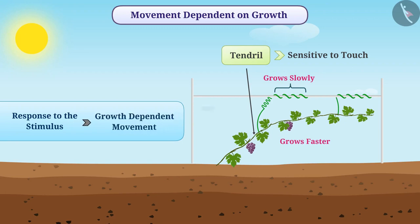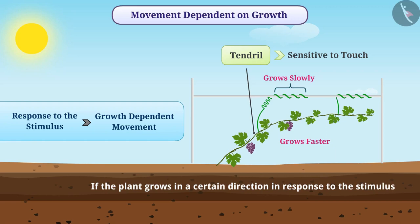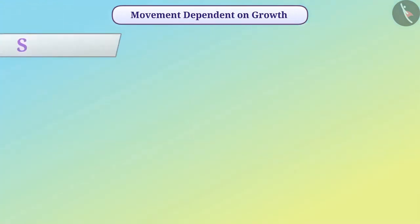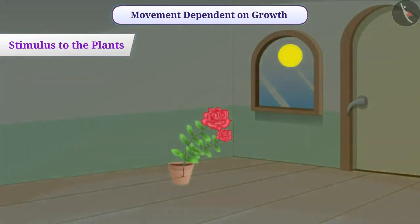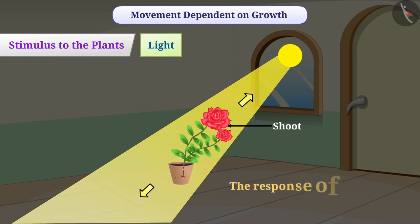When a plant grows in a certain direction in response to a stimulus, such movement is called tropism. Light is a stimulus for plants: the shoot grows towards light, while roots grow away from it. The response of a plant to the stimulus of light is called phototropism. Growth towards light is positive phototropism, and growth away from light is negative phototropism.